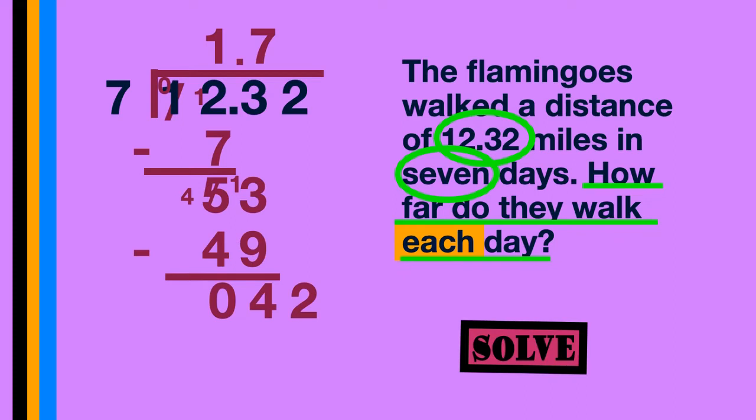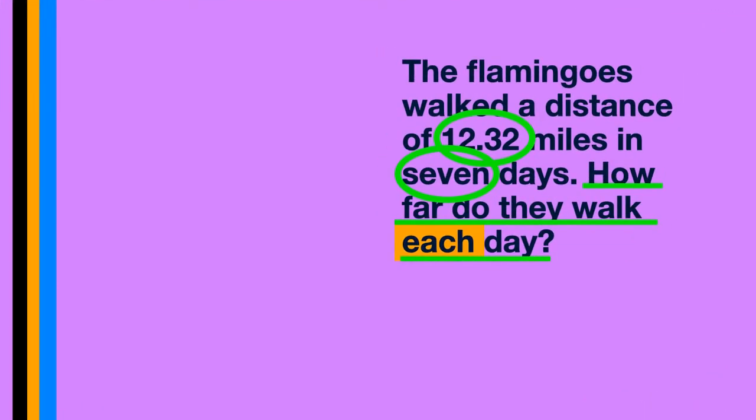7 into 42 goes 6 times. 7 times 6 is 42. When we take away, that leaves us with 0. So our answer is 1 and 76 hundredths. But guess what? We're not done yet. We need to check.